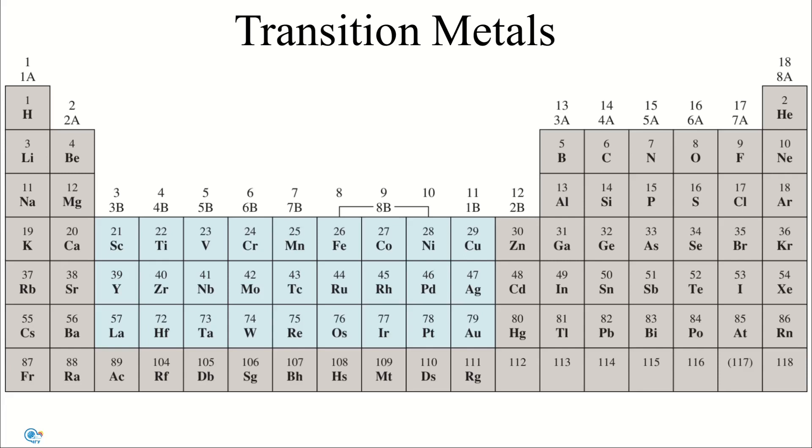Transition metals typically have incompletely filled D subshells or readily give rise to ions with incompletely filled D subshells or F subshells.